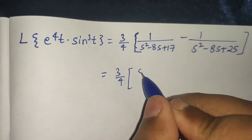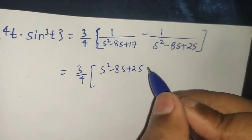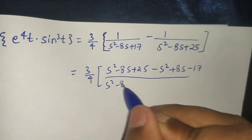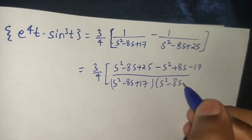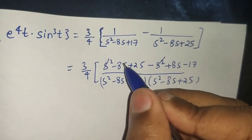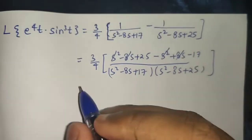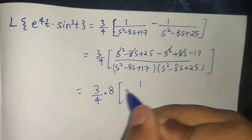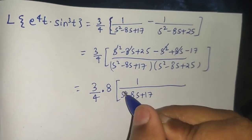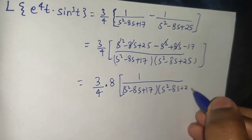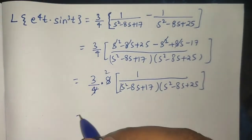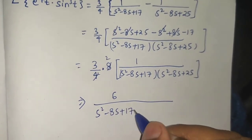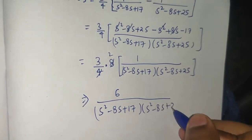Taking LCM: (3/4) · [(s² − 8s + 25 − s² + 8s − 17) / ((s² − 8s + 17)(s² − 8s + 25))]. The s² and 8s terms cancel, leaving 25 − 17 = 8. So we get (3/4) · 8 / [(s² − 8s + 17)(s² − 8s + 25)], which simplifies to 6 / [(s² − 8s + 17)(s² − 8s + 25)].